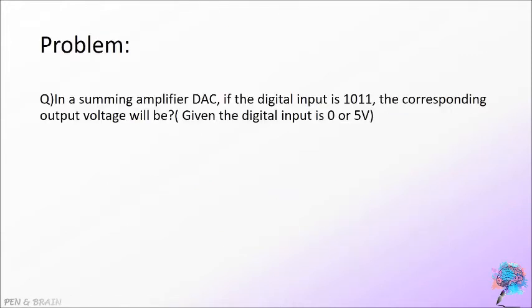In a summing amplifier DAC, if the digital input is 1011, the corresponding output voltage will be given the digital input as 0 or 5V. It is given a 4-bit input 1011 and the state of digital input is given as 0V as the lower state and 5V as the upper state.